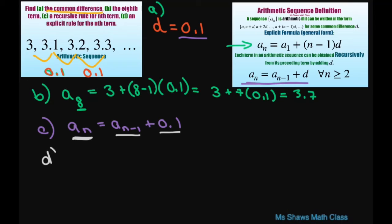Now for D, we're going to write an explicit rule. Now that one is, we're back to this one right here, where you add your common difference in your first term and simplify. So your first term was 3 plus, and then you just write n minus 1 times your common difference, which is 0.1.